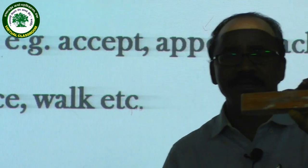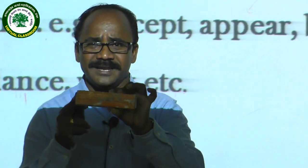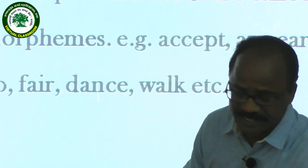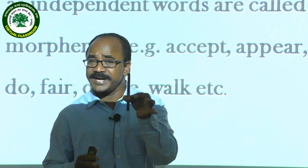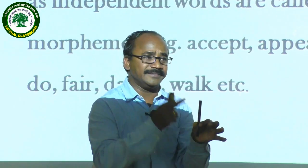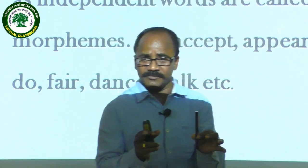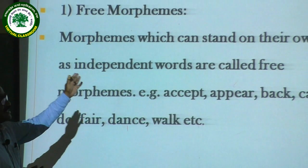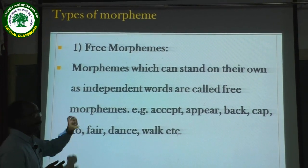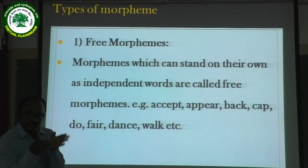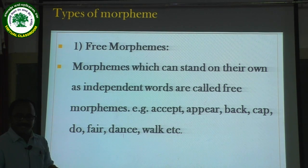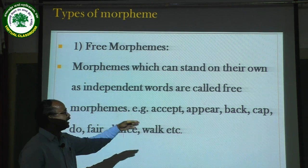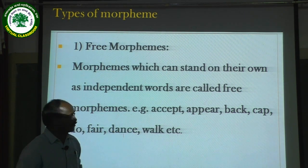Look at this bottle — 'bottle' can stand by itself; it is a lexical item, and that is why 'bottle' is a free morpheme. Look at this duster — 'duster' is a lexical entity that stands by itself, so 'duster' is a free morpheme. Look at this pen — 'pen' is a free morpheme because it can stand by itself and has its own meaning. So a morpheme which can stand on its own as an independent word or lexical entity is called a free morpheme.